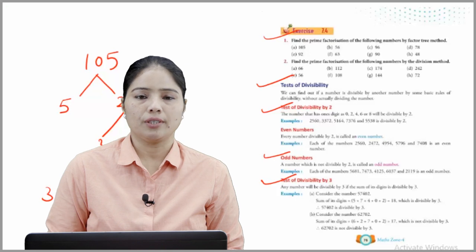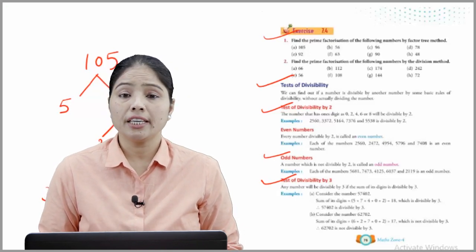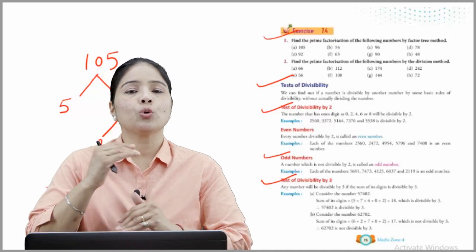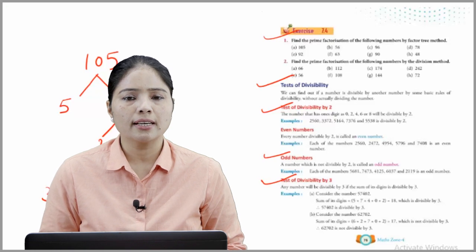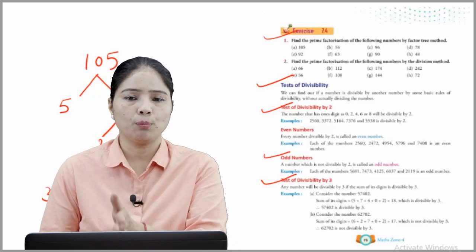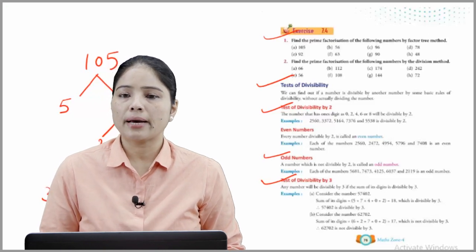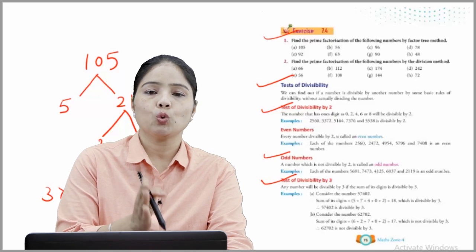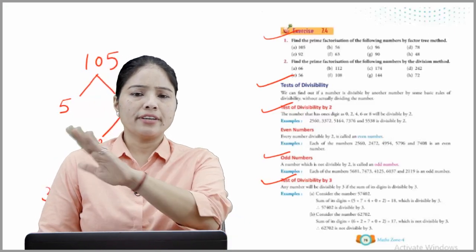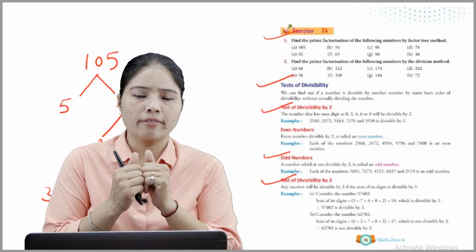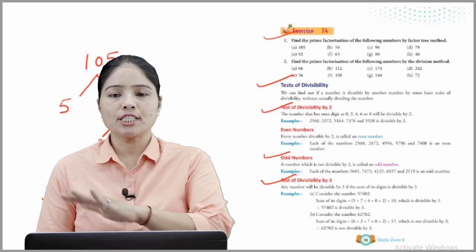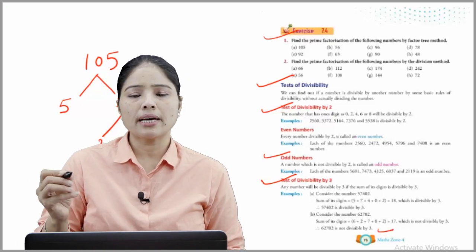Test of divisibility by 3: Any number will be divisible by 3 if the sum of its digits is divisible by 3. Example A: Consider the number 57402. Sum of digits = 5+7+4+0+2 = 18, which is divisible by 3, so 57402 is divisible by 3. Example B: Consider the number 62702. Sum of digits = 17, which is not divisible by 3, so 62702 is not divisible by 3.